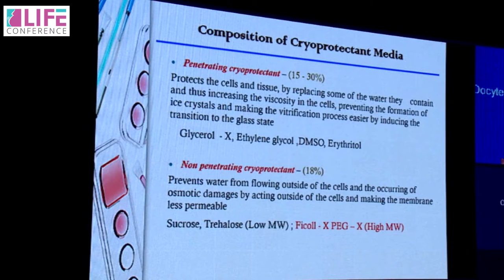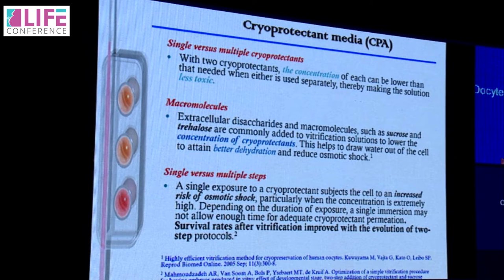The initial first decade of research was based on developing cryoprotectants. We have penetrating cryoprotectants, which protect cells by penetrating the tissue and replacing some of the water they contain — ethylene glycol and DMSO are the most commonly used — and non-penetrating cryoprotectants like sucrose and trehalose. The almost double or triple amount of cryoprotectants needed for vitrification was concerning, so research showed that using mixtures of two or three cryoprotectants is better, as the toxicity of each can be lower. Macromolecules like sucrose and trehalose were added to reduce toxicity and protect cells from osmotic shock.